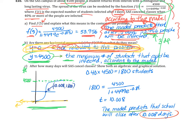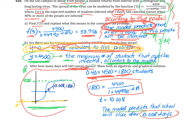Finally, it says after how many days will SAS cancel classes? Remember at the beginning we said we would cancel classes if 40% of our population had gotten the disease. So you take 40% of the 4,500 students, and that's when 1,800 students have been affected. You can either put that in algebraically and solve, or you can just solve graphically. Put in a Y sub 2, a horizontal line of Y equals 1800, see where their point of intersection is. Then you would see that after approximately 10.008 days, 1800 people would be infected, which means that's when we're going to cancel school.